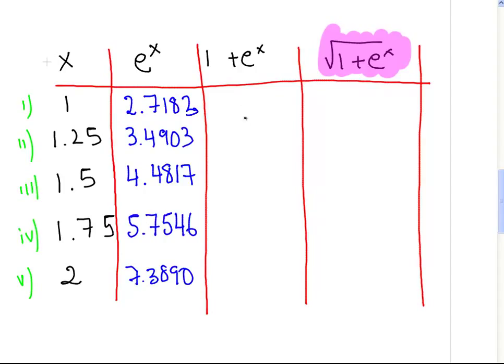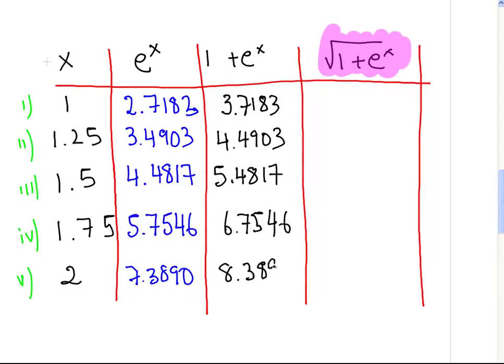Now, what we're going to do is add 1 to each of those values, rather a simple exercise. So this is 3.7183, 4.4903, 5.4817, 6.7546, and 8.3890.